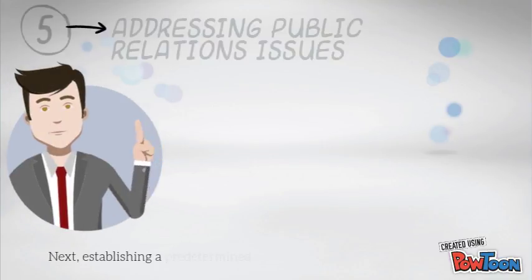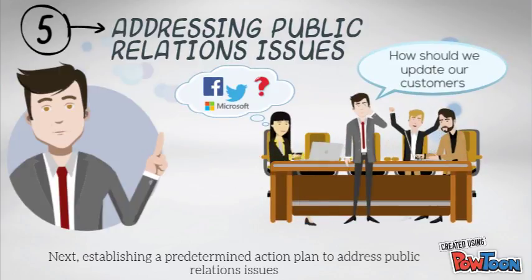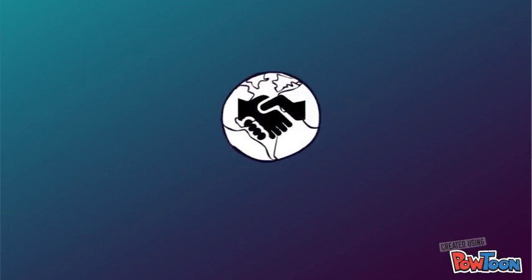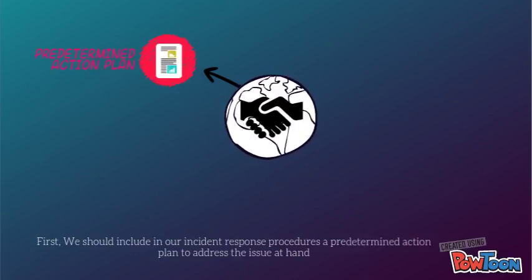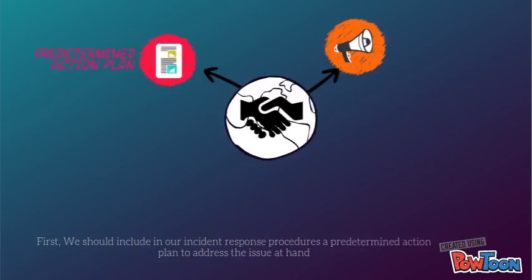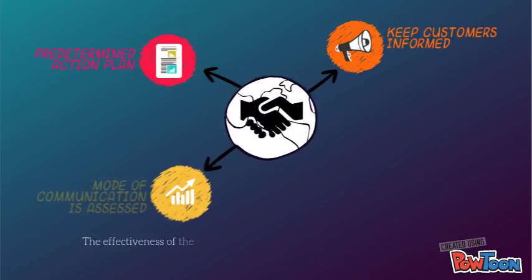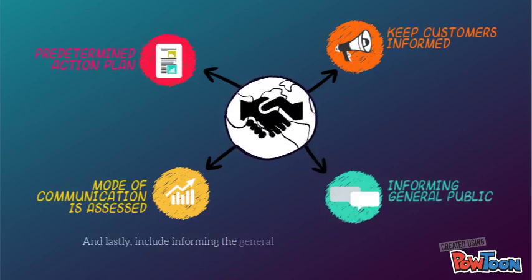Next, establishing a predetermined action plan to address public relations issues. We should include in our incident response procedure a predetermined action plan to address the issue at hand. Next, we should keep customers informed of any major incident. The effectiveness of the mode of communication is then assessed, and lastly, include informing the general public when necessary.